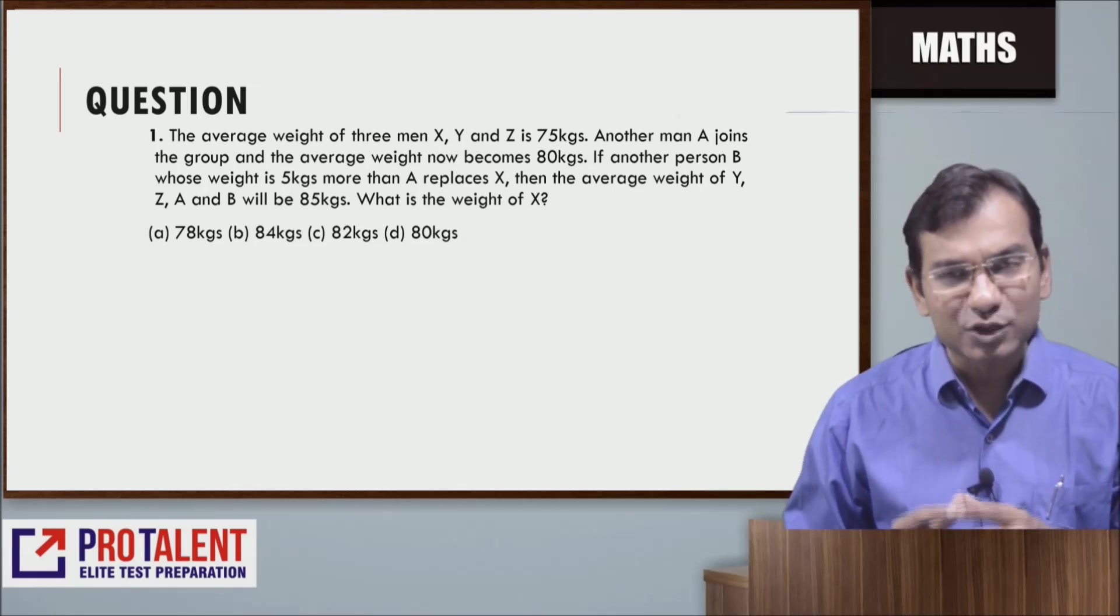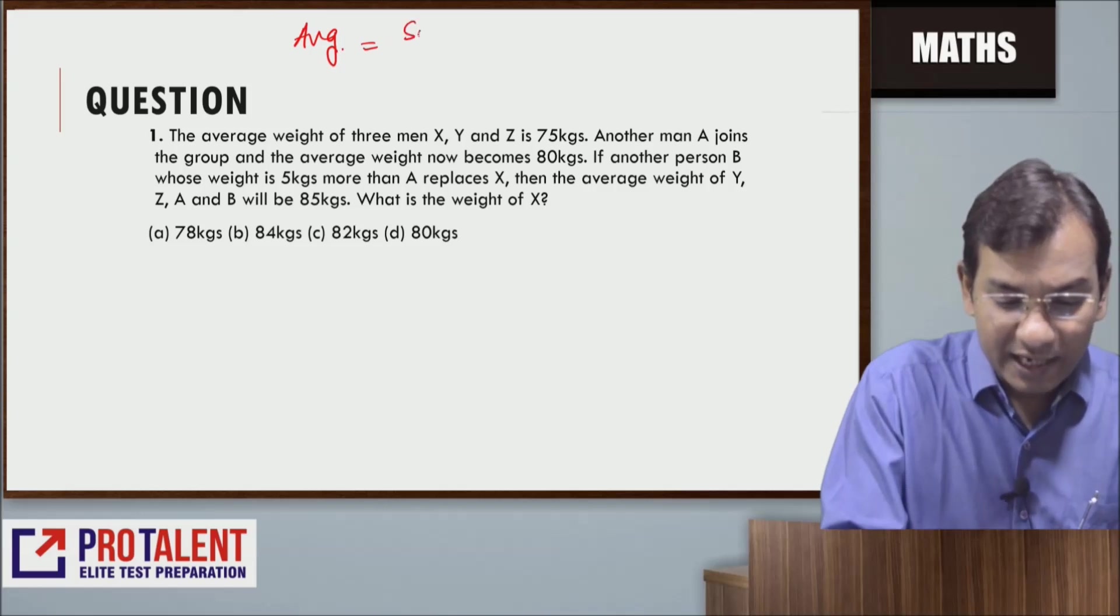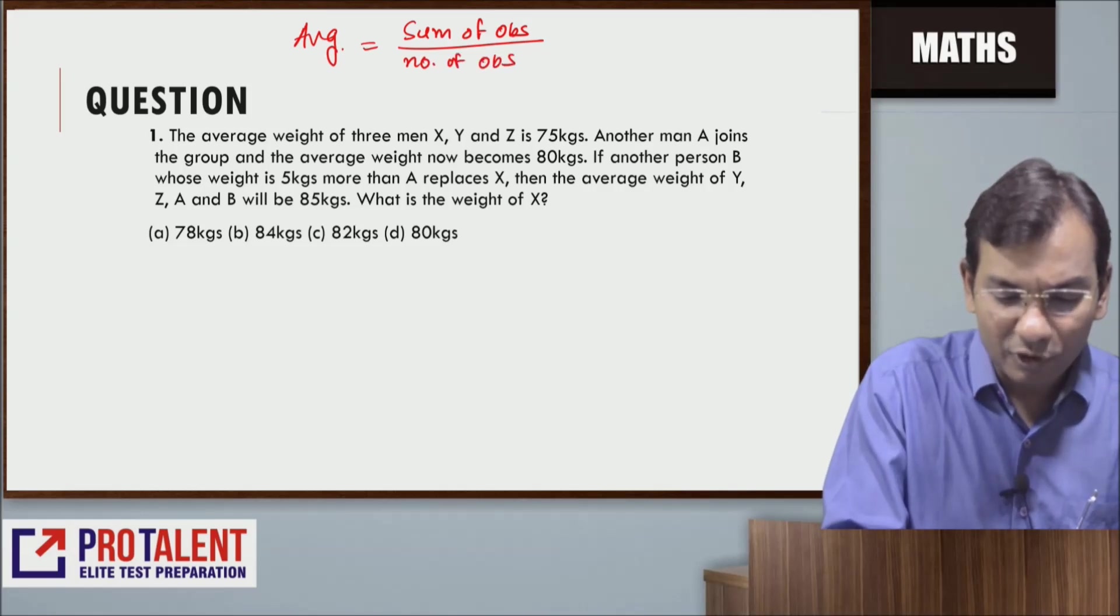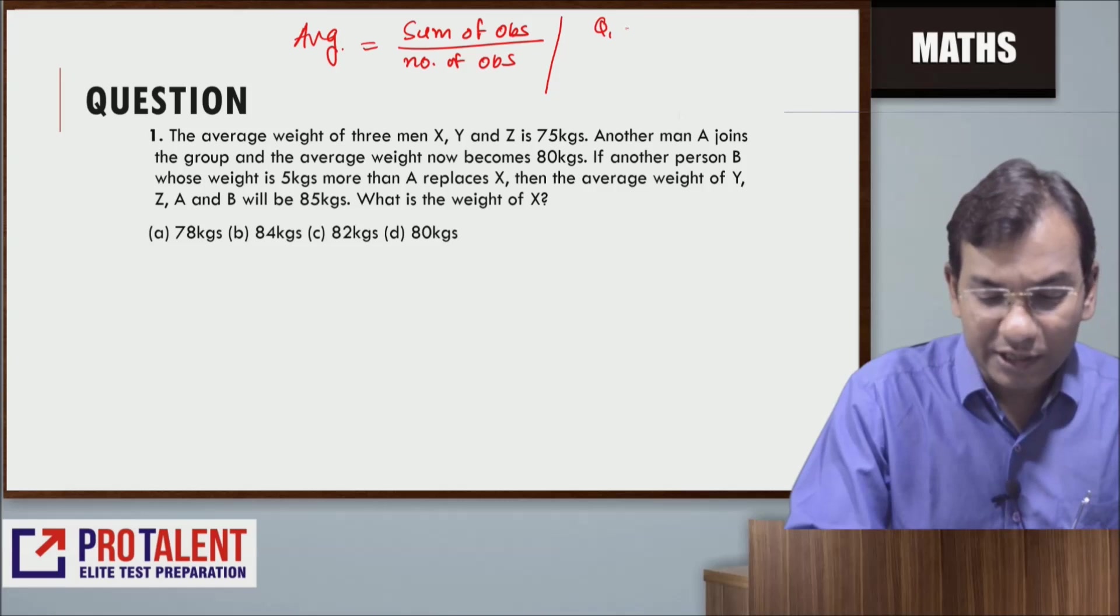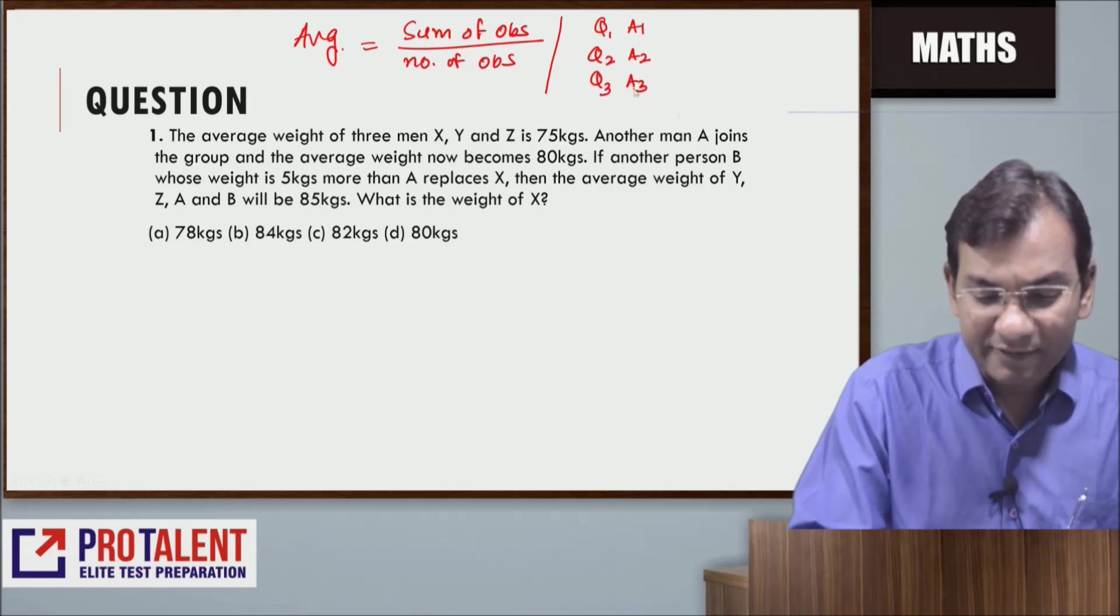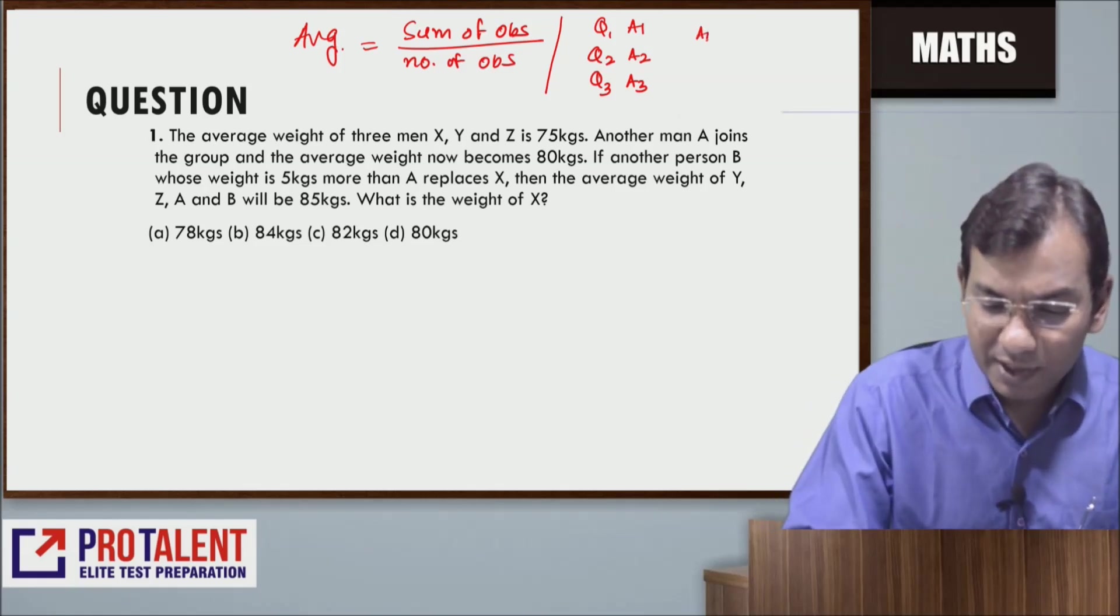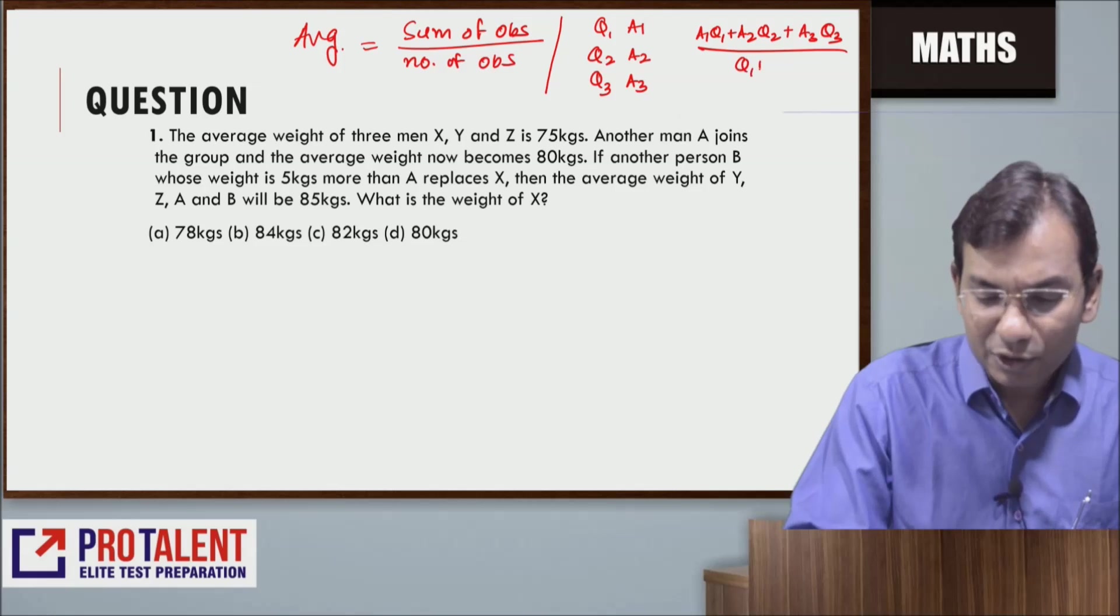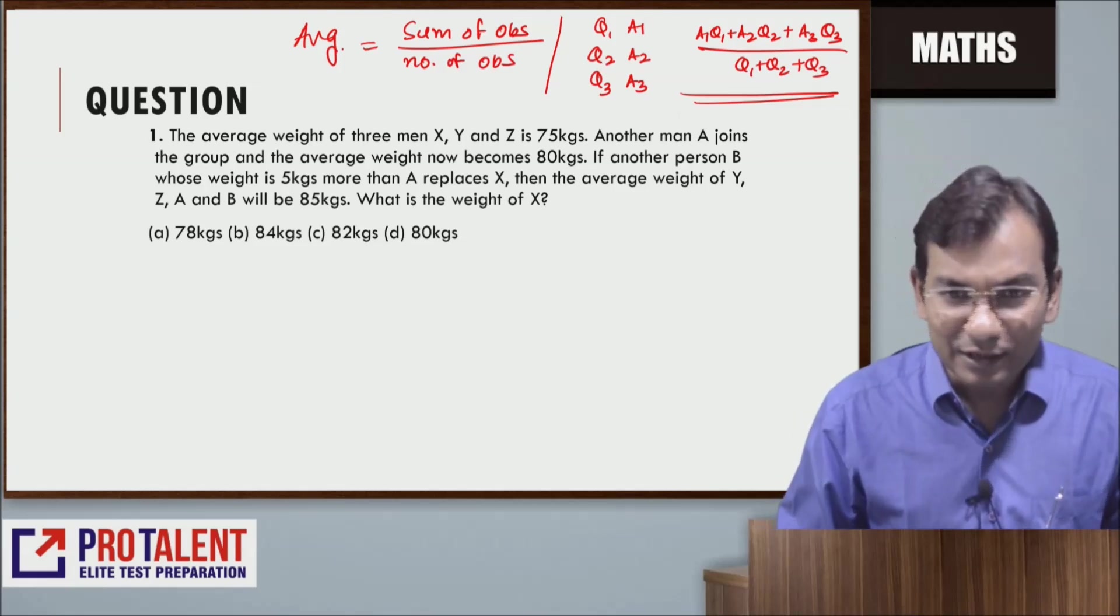Let me quickly review the concept of average. Average is the sum of observations divided by number of observations. At the same time, when you have different quantities - if quantity q1 has average a1, quantity q2 has average a2, quantity q3 has average a3 - then their combined average would be (a1×q1 + a2×q2 + a3×q3) divided by (q1 + q2 + q3). These are the two important concepts applicable to averages.